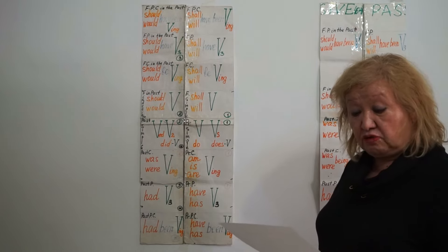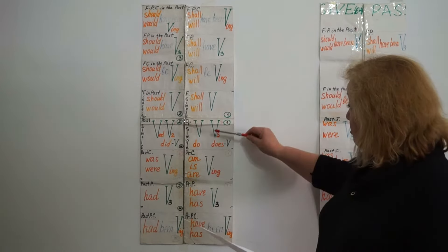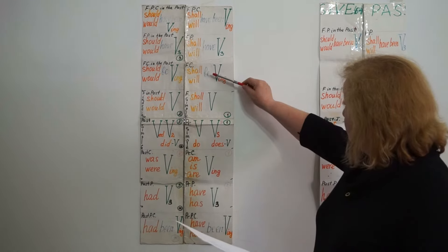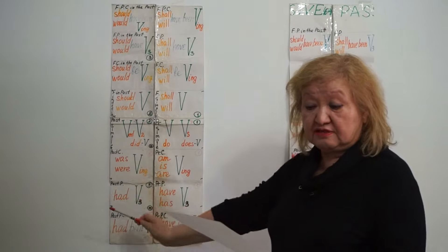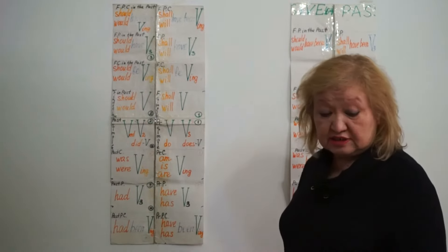They have only eight tenses. Present simple, present perfect, future simple, future perfect. And the same in the past, four tenses. All together eight.